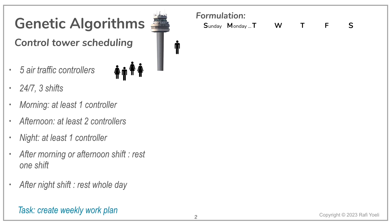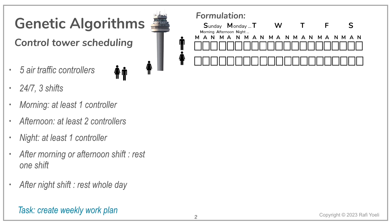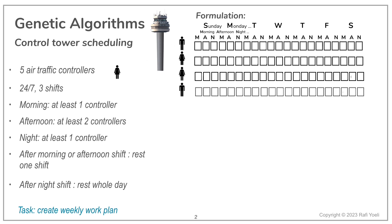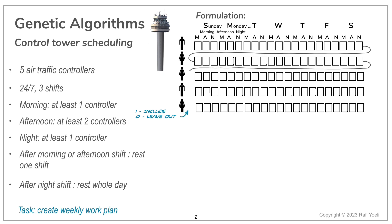Our chromosome will be one long binary string, with a separate gene for each shift, for every controller, over a whole week. Recall that chromosomes of genetic algorithms should resemble the solution, so we think this arrangement is perfect. When the run is over, each row will simply be the weekly schedule of the controller next to it.